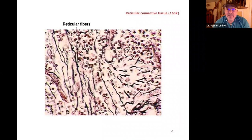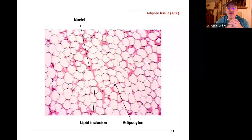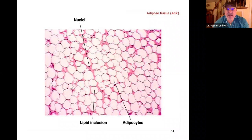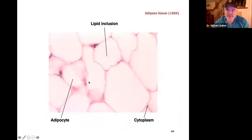This is reticular connective tissue, which helps give organs their shape and contour. Now, students often confuse adipose tissue with squamous cells because the cells look flat and irregular — but remember, squamous cells have centrally located nuclei. In adipose tissue, the nuclei are off to the periphery. There's no centrally located nucleus — these are adipose fat cells.